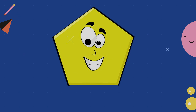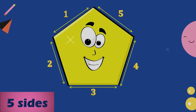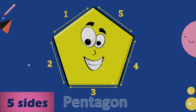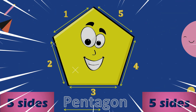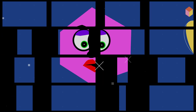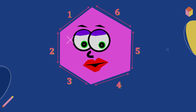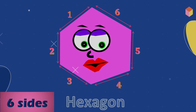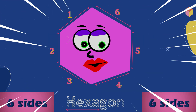Let's count the number of sides. One, two, three, four, five. Five sides. Five sides is Pentagon. Penta means five. Six sides is Hexagon. Hexa means six.